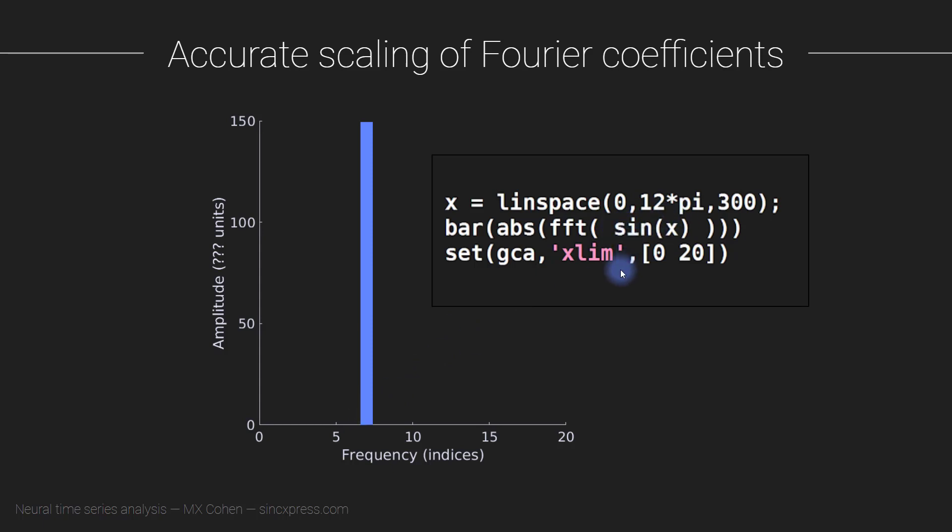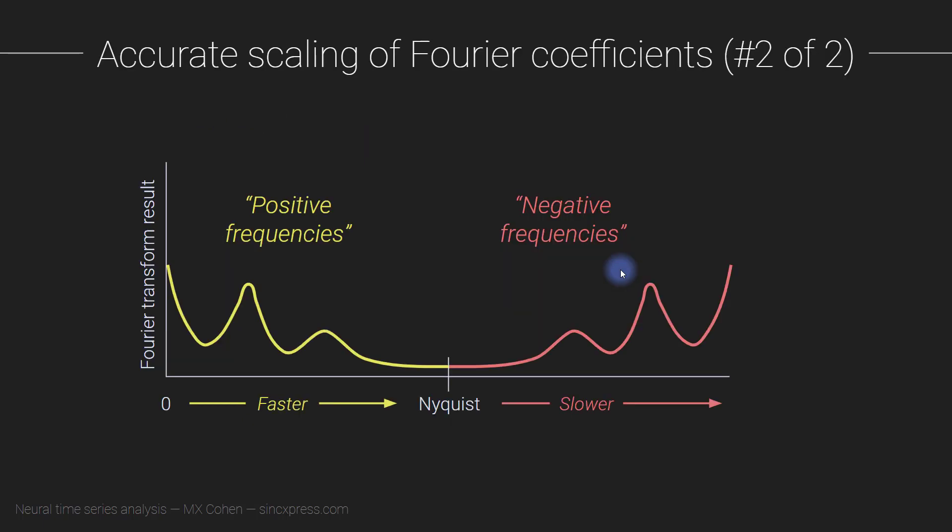Well, I hope that you can already see where this is going. I hope you can already guess what is going to be the second of two normalization factors for the Fourier coefficient. And that is to multiply by 2, because the amplitude gets split between the positive frequencies and the negative frequencies. So we can double the positive frequencies, and then ignore the negative frequencies.